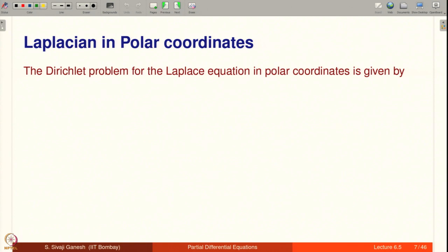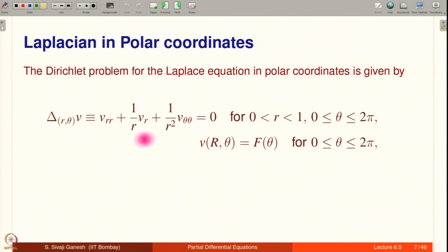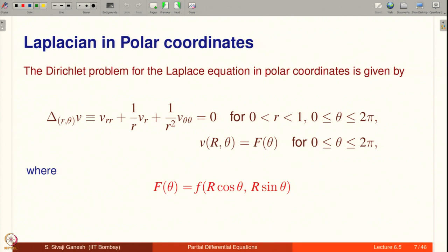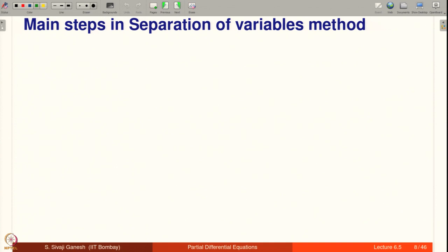The Dirichlet problem for the Laplace equation in polar coordinates is given by these two equations. This is precisely the Laplacian in polar coordinates. I will leave it as an exercise to check that the Laplacian in polar coordinates is given by the operator v_rr + (1/r)v_r + (1/r²)v_θθ. We are given u(x, y) on the circle, which defines a function F for θ in [0, 2π] as F(θ) = f(R cos θ, R sin θ), since in polar coordinates x = r cos θ and y = r sin θ.